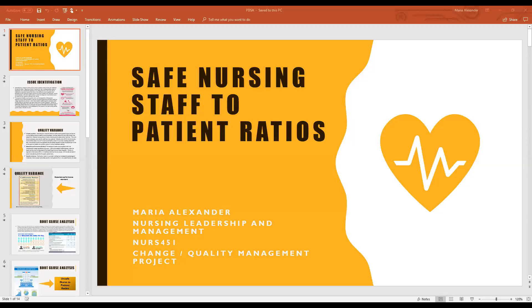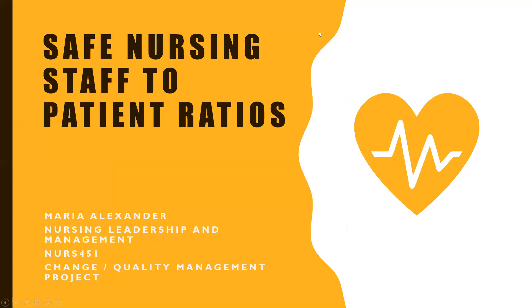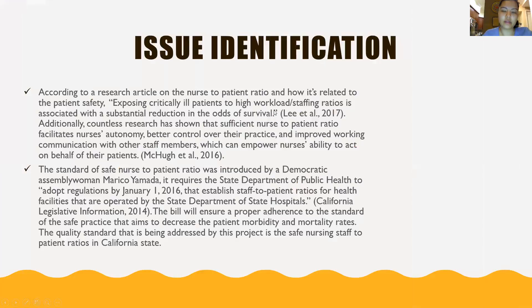Hello class, my name is Maria Alexander and today we'll be talking about safe nursing staff to patient ratios. According to research, the nurse-to-patient ratio is related to patient safety. Exposing critically ill patients to higher workload staffing ratios is associated with a substantial reduction in the odds of survival according to Lee. Additionally, research has shown that sufficient nurse-to-patient ratios facilitate nurses' autonomy, better control over practice, and improved communication with other staff members, which can empower nurses' ability to act on behalf of their patients.